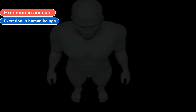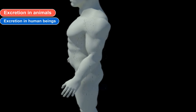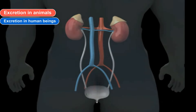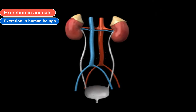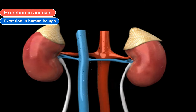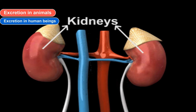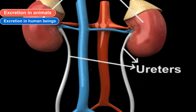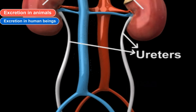Excretion in Human Beings. This is the human excretory system. The parts of the human excretory system are: a pair of kidneys, a pair of ureters, a urinary bladder, and a urethra. The wastes present in the blood are removed through a mechanism to filter blood, and this process is carried out by the capillaries in the kidneys.